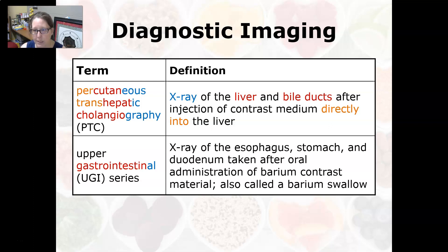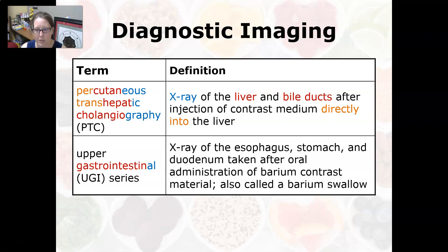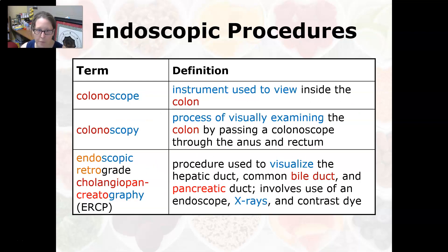Percutaneous transhepatic cholangiography, also known as PTC, is an X-ray of the liver and bile ducts after the injection of contrast medium directly into the liver. An upper gastrointestinal, or UGI, series is an X-ray of the esophagus, stomach, and duodenum after oral administration of barium contrast material — something you swallow. It is also called a barium swallow study.